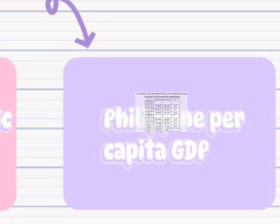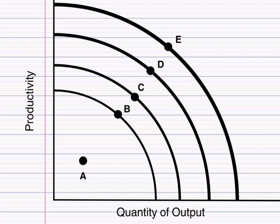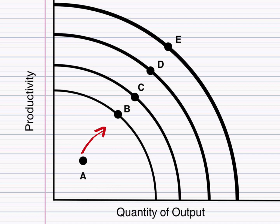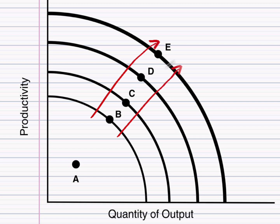The production possibilities frontier graph depicted in the figure illustrates the developmental stages of a growing economy. At point A, the economy is characterized by underutilized resources, indicating that it has not reached its full productive capacity, suggesting stagnation where the economy is not maximizing its potential output. The shift from point A to point B signals growth, as resources are now being more efficiently utilized, leading to an increase in production possibilities. The subsequent jumps from point B to points C, D, and E represent consistent and sustained economic development over an extended period.